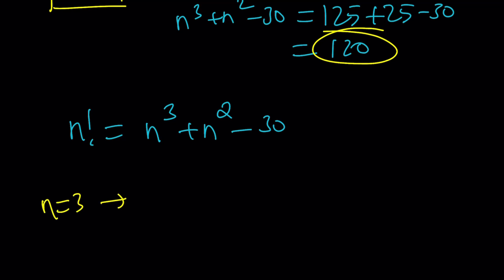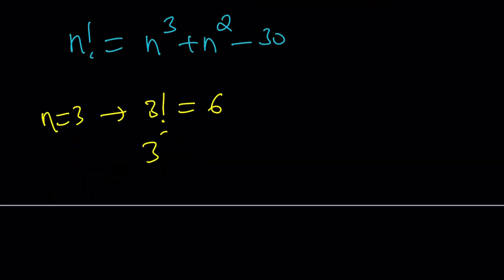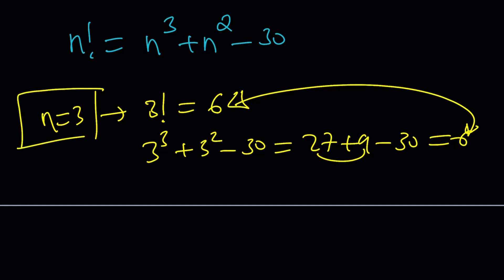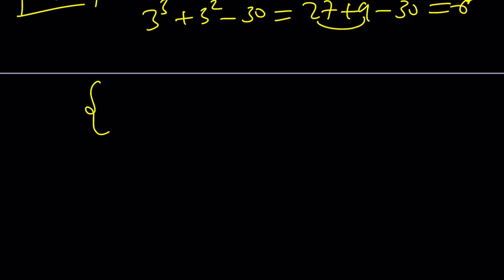Is that going to work? Let's test it out. 3 factorial is 6 and 3 cubed plus 3 squared minus 30 is 27 plus 9 minus 30, which is 36 minus 30, which equals 6. Aha! I got another solution. Beautiful. So, n equals 3 is just another solution. Therefore, we have two solutions because nothing bigger than 5 is going to work. Nothing less than 5 besides 3 will work. So, we only got two solutions.